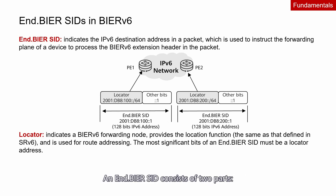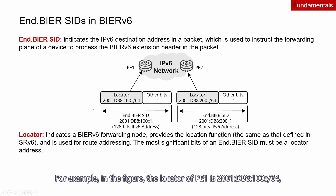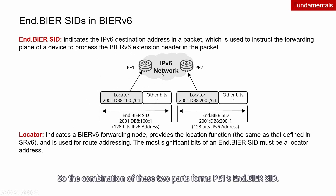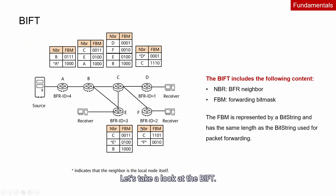A BIER SID consists of two parts: locator and other bits. A locator indicates a BIERv6 forwarding node and provides a location function. For example, the locator of PE1 is one part and other bits are another, and the combination of these two parts forms the PE1 BIER SID. Let's take a look at the BIFT.